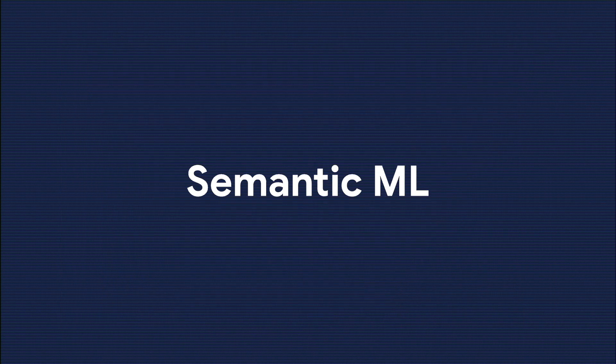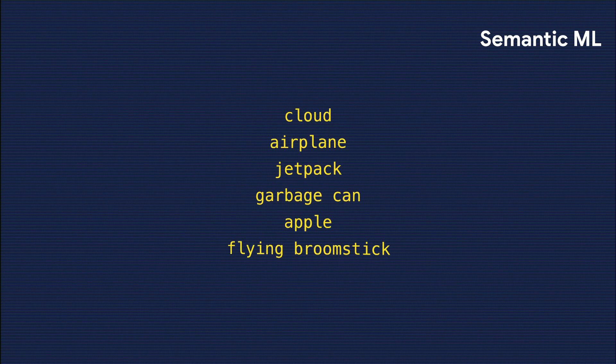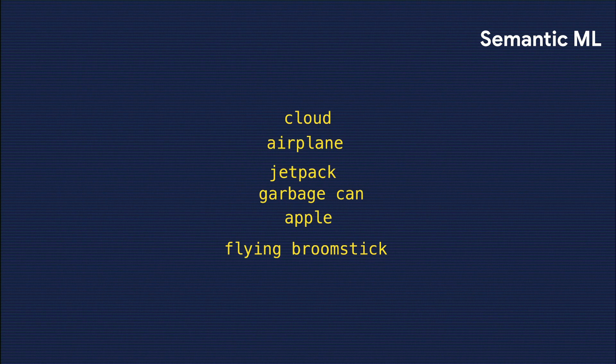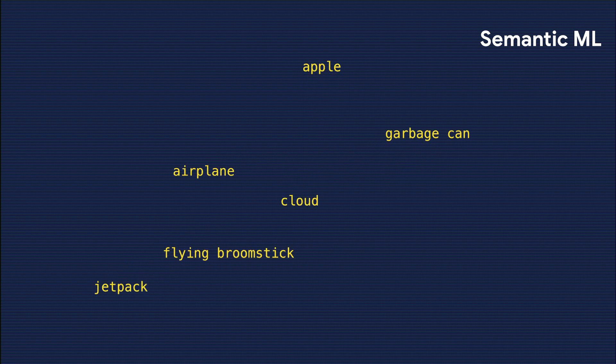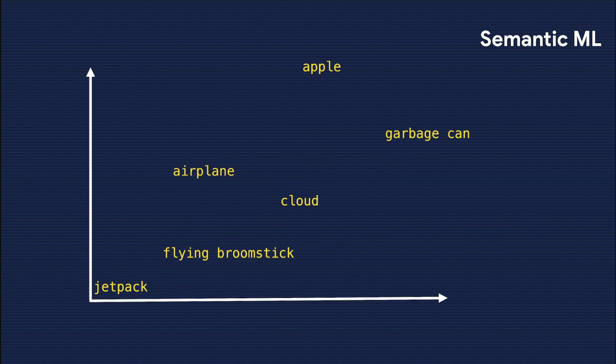What SemanticML allows you to do is it allows you as a developer to focus mainly on the interesting answers. SemanticML is a way of making sense of words or sentences with machine learning. Given a set of words, you can use a model to see which pairs are the most similar. For example, an ML model can tell you that a jetpack is more similar to a flying broomstick than it is to a garbage can or an apple.